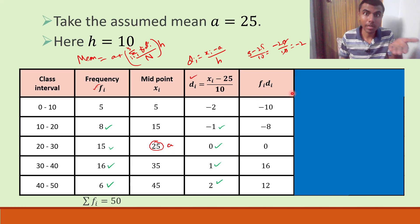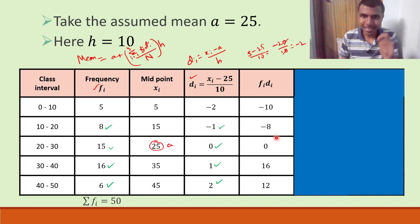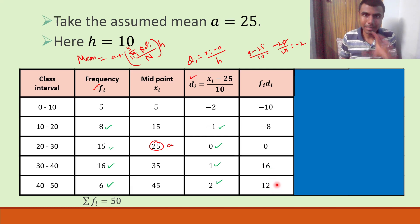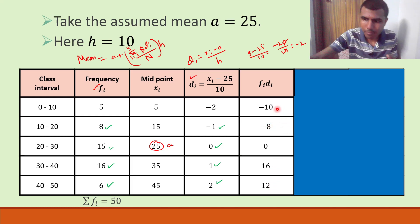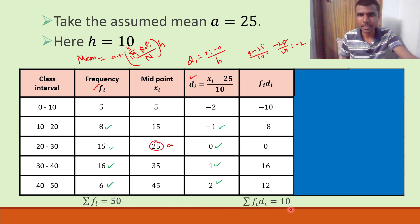Now sigma fi * di: adding these up carefully — (-10) + (-8) = -18; -18 + 0 = -18; -18 + 16 = -2; -2 + 12 = 10. So sigma fi * di = 10. Alternatively: 12 + 16 = 28, 28 - 8 = 20, 20 - 10 = 10. So sigma fi * di is 10.